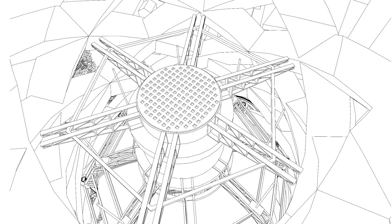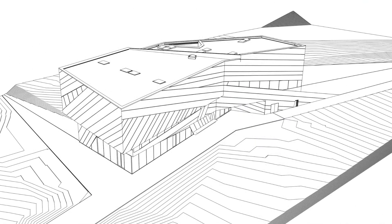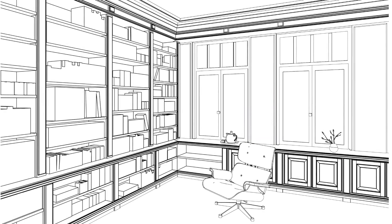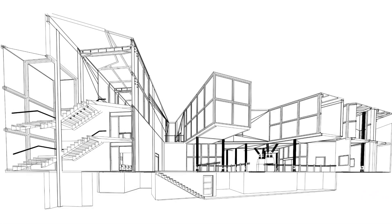Hidden Line Rendering allows you to take views of your model and render them as if you had drawn them with a pen, giving you crisp, clean drawings.